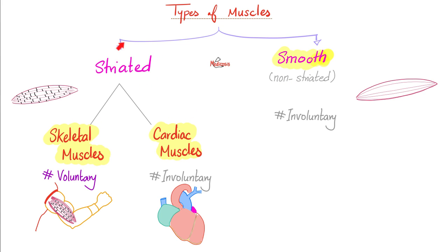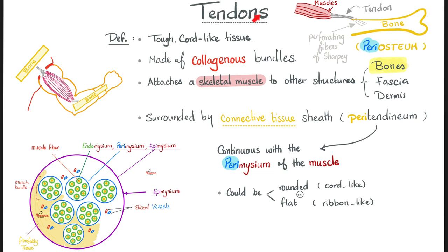Skeletal and cardiac are striated. Smooth muscles are non-striated — that's why we call them smooth, with no striation, no zigzag action. Tendons: what's the definition of a tendon? A tough cord-like tissue made of connective tissue — specifically, collagen fibers bundled together. The function of that tendon is to attach the muscle to bone, though it can also attach muscle to fascia or sometimes the dermis. But in most cases, it attaches the muscle to bone.